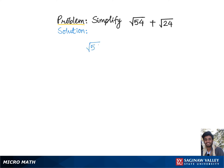To simplify square root of 54 plus square root of 24, we will first rewrite these radicands as multiples of the highest possible perfect squares.